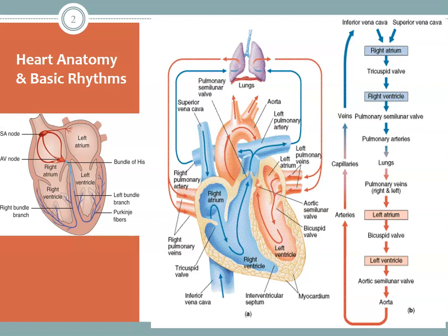Note that oxygen-poor, CO2-containing blood travels through the pulmonary artery to the lungs where CO2 is exchanged for O2. The blood then travels through the pulmonary vein, emptying oxygen-enriched blood into the left atrium. As the atrium contracts, blood flows from the left atrium into the left ventricle through the open mitral valve. When the ventricle is full, the mitral valve shuts to prevent backflow. As the ventricle contracts, oxygen-enriched blood leaves through the aortic valve into the aorta and arteries to complete circulation.